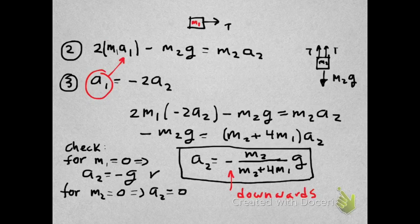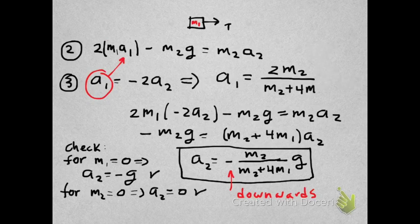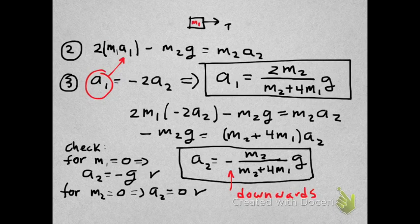Now in A2, we can replace in equation number 3 to get A1. So we get A1 equals minus 2 times A2. So the minus with the minus cancels. And A1 is 2M2 divided by M2 plus 4M1G.